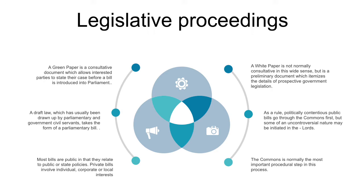A bill will receive a formal first reading when it is introduced into the Commons by the government or a private member. After a variable period ranging from one day to several months, the bill is given its second reading after a debate on its general principles.